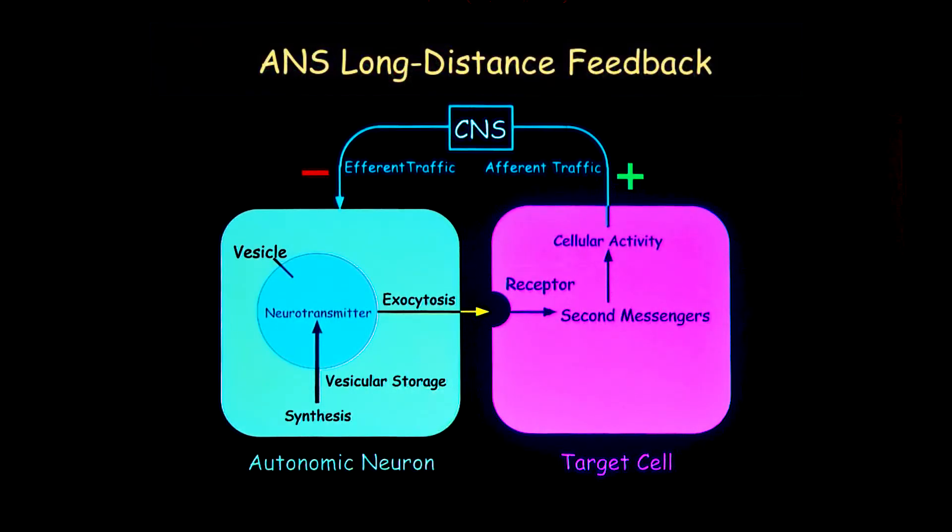It's important to realize that a key aspect of autonomic function is neurotransmission. Chemical messengers are released from nerves and have key effects. The general arrangement is shown here.